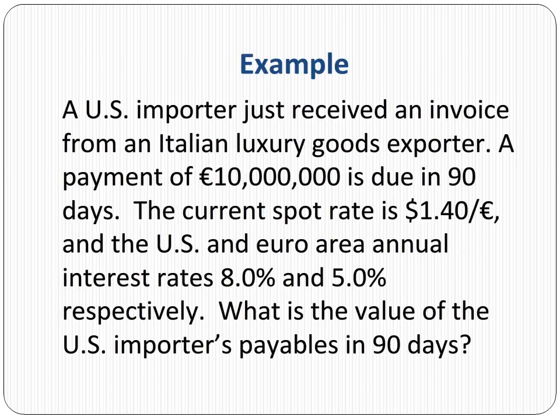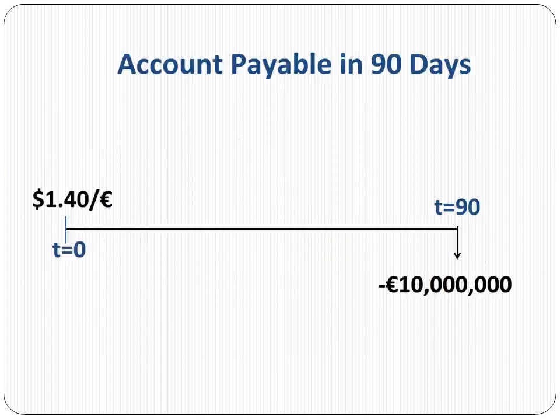Let's take a look at an example of a US importer looking to hedge 10 million euros payable in 90 days to an Italian supplier. The annualized US borrowing rate for the importer is 8% and the eurozone deposit rate is 5%. Here we have a timeline showing the current spot rate of $1.40 per euro and the payable amount of 10 million euros.